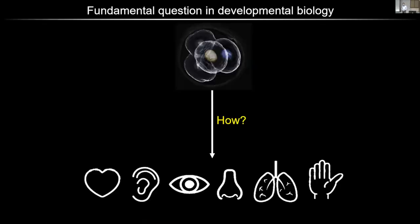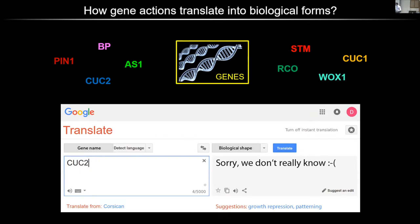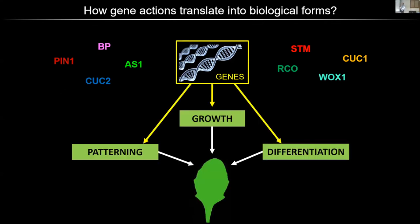One of the biggest questions in developmental biology is how do we get from a group of undifferentiated cells — meristematic cells or a primordium — into the variety of different shapes we see in nature. How do we get a hand instead of an ear? The genetic basis of development is relatively well understood; we know the genes involved in leaf development, for example. The biggest challenge is understanding how the action of those genes translates into biological forms. Genes act on different general developmental processes: some influence patterning, some influence growth, and others determine tissue differentiation.